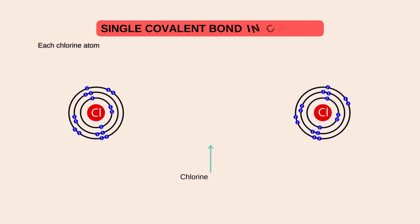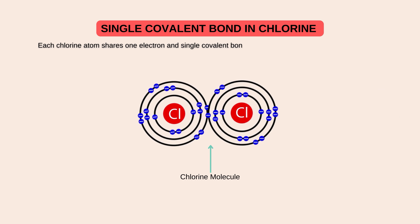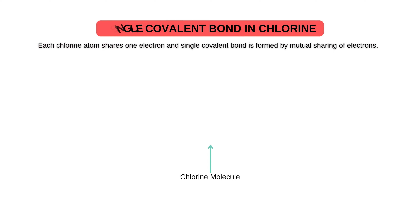Single covalent bond ki dusri example mein chlorine molecule ki example hai. As we all know, its atomic number is seventeen and it has seven electrons in its valence shell. Stability achieve karne ke liye is ko mazeed ek electron ki zarurat hai. Chlorine atom apne is ek electron ki zarurat ko mukammal karne ke liye dusre chlorine atom ke saat apne ek ek valence shell electron ki mutual sharing karta hai, aur chlorine molecule mein convert ho jate hai.